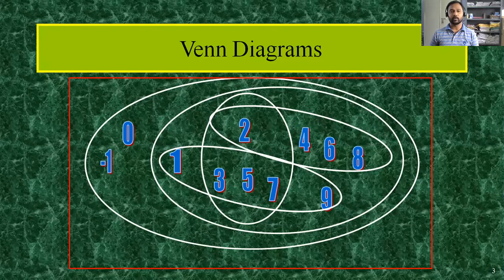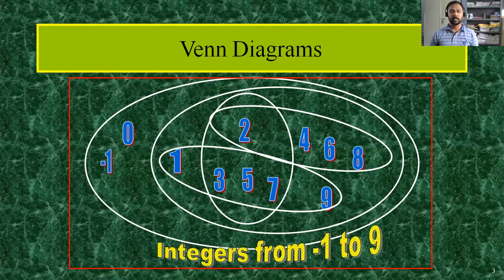Here is a Venn diagram. You can see a big rectangle which represents the universal set. Here the universal set represents the numbers from minus one to nine — you can see 10 digits from minus one to nine. The biggest set represents integers from minus one to nine; it is the most outer set. You can see every digit from minus one to nine inside the set.